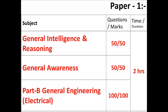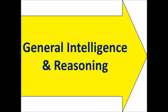Here are the Paper 1 details: General Intelligence and Reasoning — 50 questions for 50 marks; General Awareness — 50 questions for 50 marks. Part B is General Engineering, which is the common subject for Electrical Engineering.